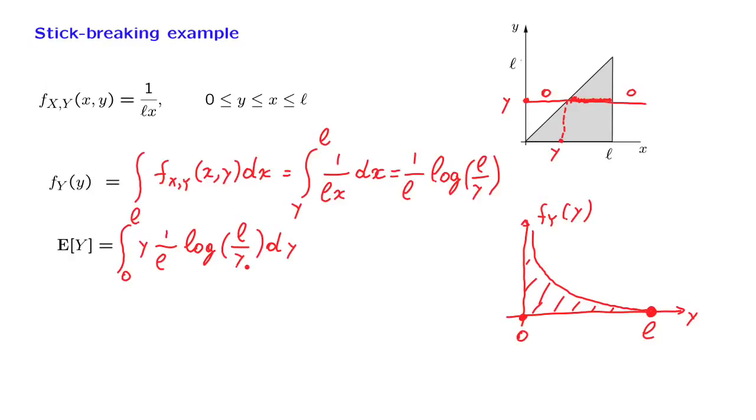So let us look for an alternative and more clever approach. The idea is to divide and conquer. We're going to use the total expectation theorem, where we're going to condition on X. The total expectation theorem tells us that the expected value of Y is the integral over all possible values of the random variable X, which is from 0 to L, the density of X, which is 1 over L, times the conditional expectation of Y, given that X is equal to some little x. And we integrate over all x's.